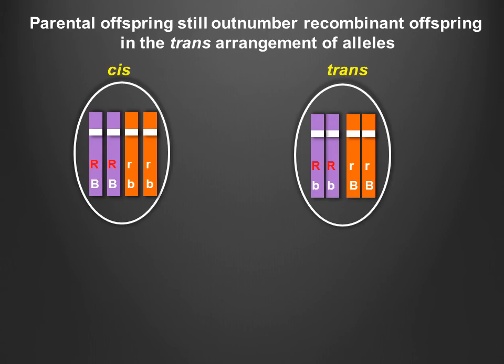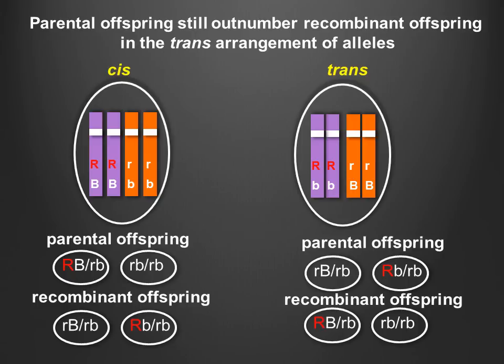Now consider the alternative arrangement of the two genes on the same chromosome. In the trans, or repulsion, arrangement, each homolog carries one dominant and one recessive allele. This arrangement is similar to the cis arrangement in that the same four classes of offspring are generated. However, the two classes of offspring that were of the parental type in the cis arrangement are now the recombinant type in the trans arrangement, and vice versa. Nonetheless, whether the alleles are in a cis or trans arrangement, we should still expect the parental offspring to outnumber the recombinant offspring.